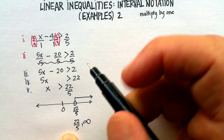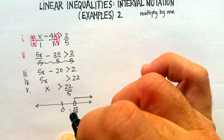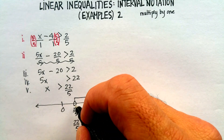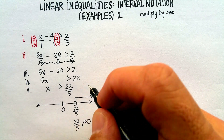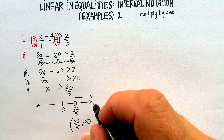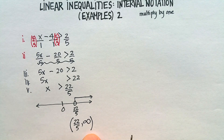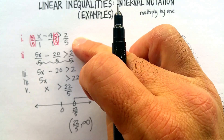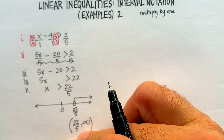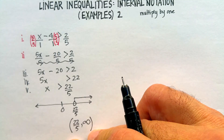For interval notation, remember you always read the graph left to right. The lower limit is 22 over 5 and the upper limit is positive infinity. Parentheses are used when you don't have an exact stop or an equal sign — it approaches 22 over 5 but never quite lands there, and infinity never lands on any particular number. So the interval notation answer is: parenthesis 22 over 5, comma, positive infinity, parenthesis.